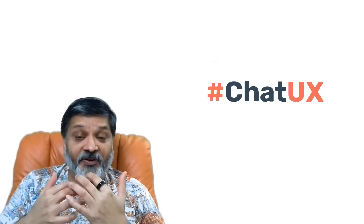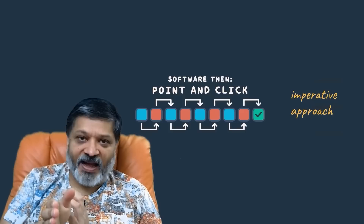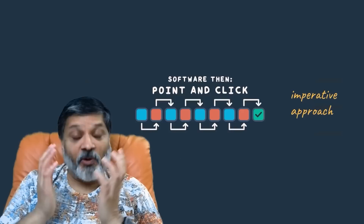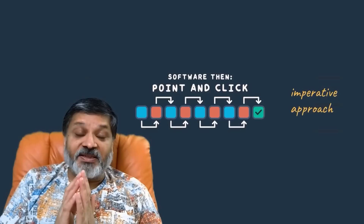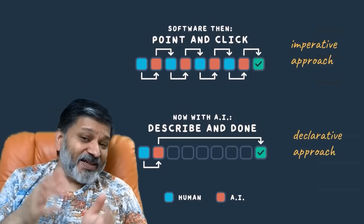Traditionally, when we build software, we take what engineers would call an imperative approach. You go through a step-by-step process — the user clicks here, drags there, clicks that, touches this, swipes that — and at the end of a series of steps they get the outcome they were looking for, like a report. With the power of generative AI and ChatGPT, we can take a declarative approach. We can just say, as humans, here's the thing I want. AI does all the work, and we just get the outcome. We can skip to the end.